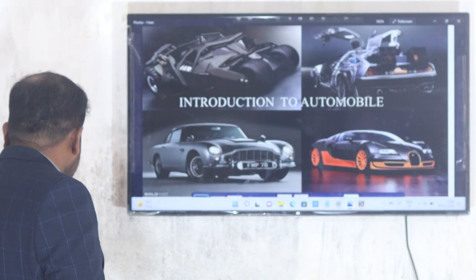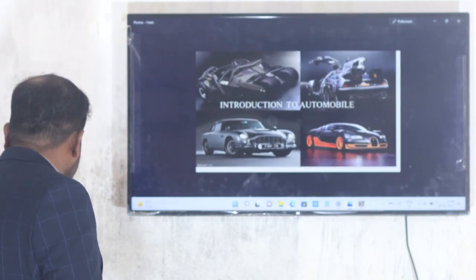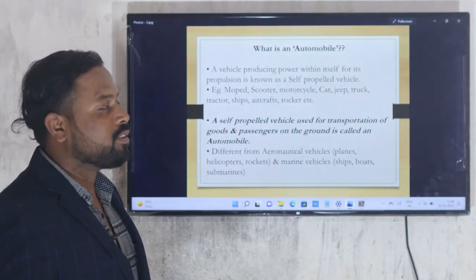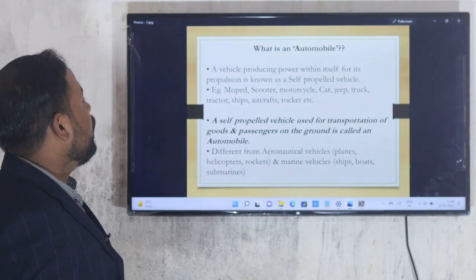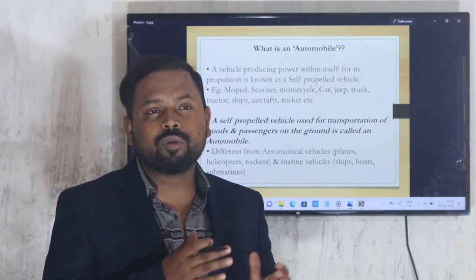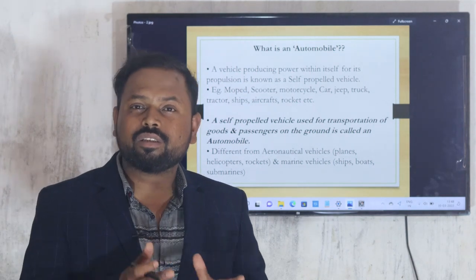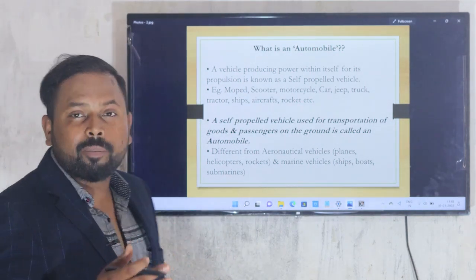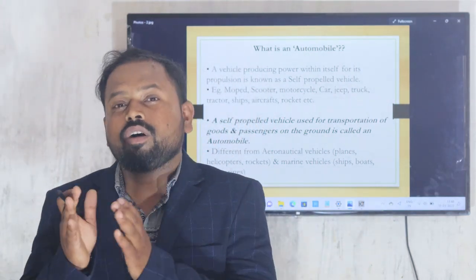The definition of an automobile: a vehicle powered within itself, moving from one place to another by carrying passengers and goods. Now we move to the next topic, the classification of automobile.